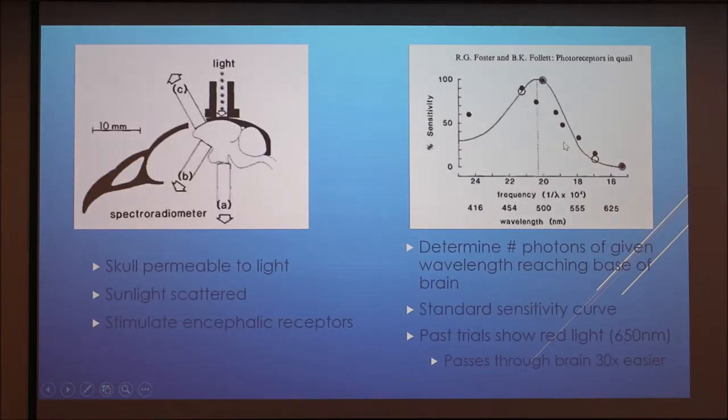Past trials have shown that red light, 650 nanometers, is most readily absorbed. However, new research in the last five years suggests that those trials do not account for the evidence that red light passes through the brain tissue about 30 times more easily than other light. So it makes sense that more of it is seen near the hypothalamus.